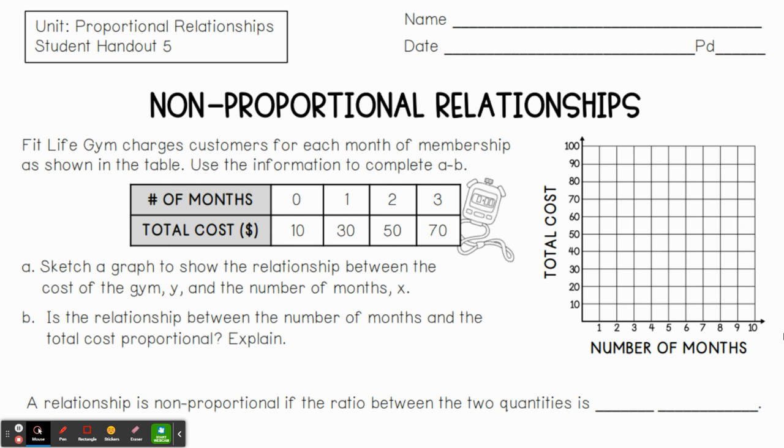FitLife Gym charges customers for each month of membership as shown in the table. Now, what do you notice is different about this compared to a proportional relationship? Hopefully you're noticing this. When we have zero months, we have a cost of $10. So that means this is a little bit different than what we're used to seeing. If there's zero months and $10, that means there must be an upfront cost.